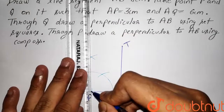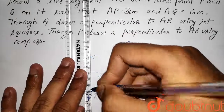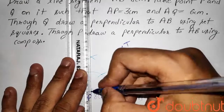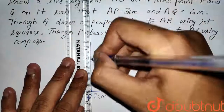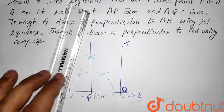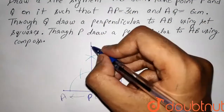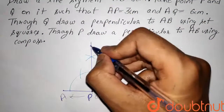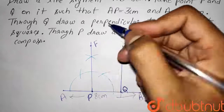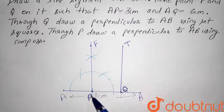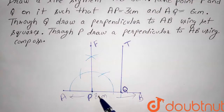Now, joining P to the point of intersection of both the arcs. Let this point be F, so PF is the perpendicular to AB through point P.